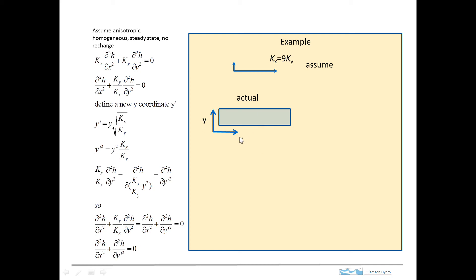So this is y and x, and what I'm going to do now is draw this in the y prime coordinate system. So y prime is y times the square root of this ratio. Well, Kx over Ky is equal to 9, so the square root of that is equal to 3. So y prime is equal to 3 times y.